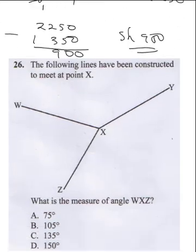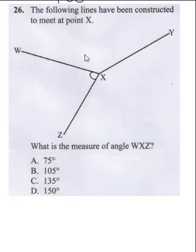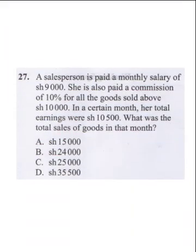Question 26: the following line has been constructed to meet a point X. What is the measured angle of WXZ? All you need to do in this question is place your protractor and measure its angle. When you measure the angle with your protractor you're going to get 75 degrees.